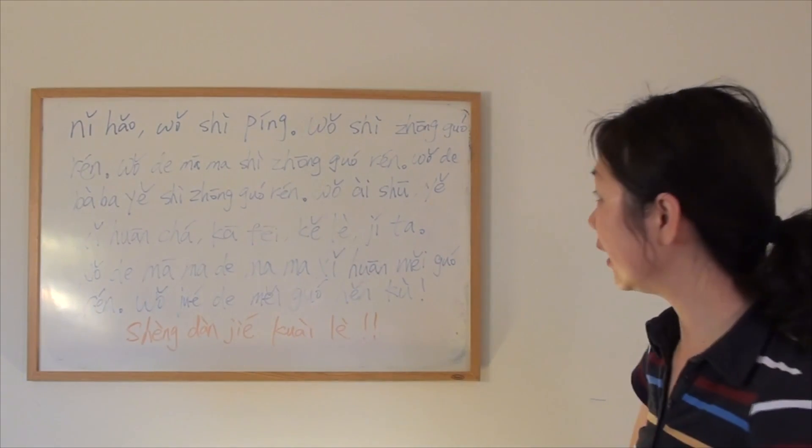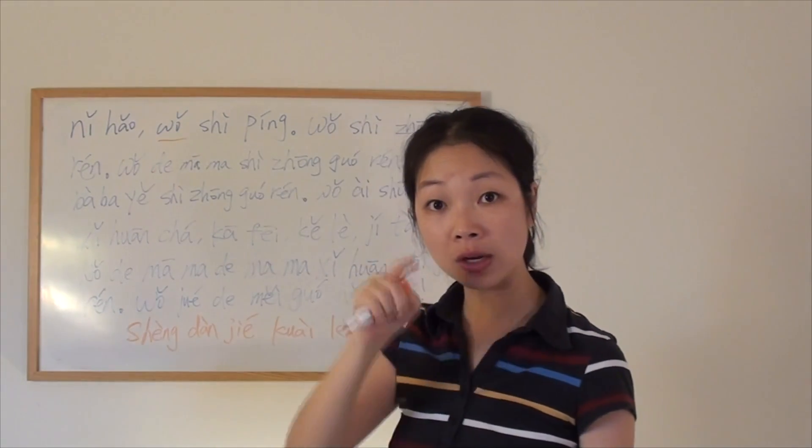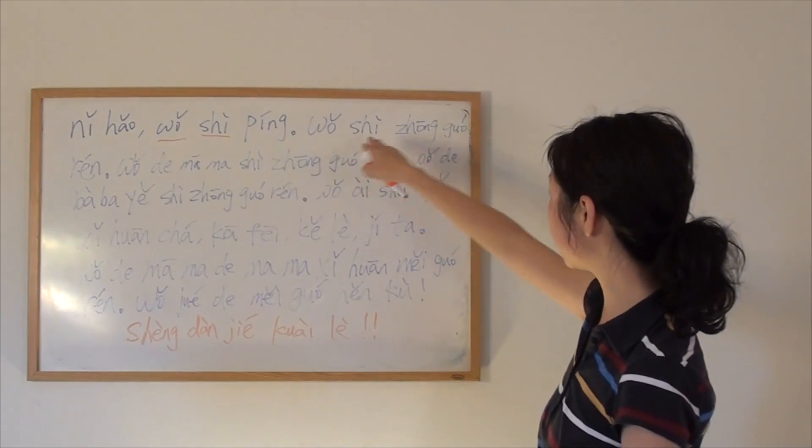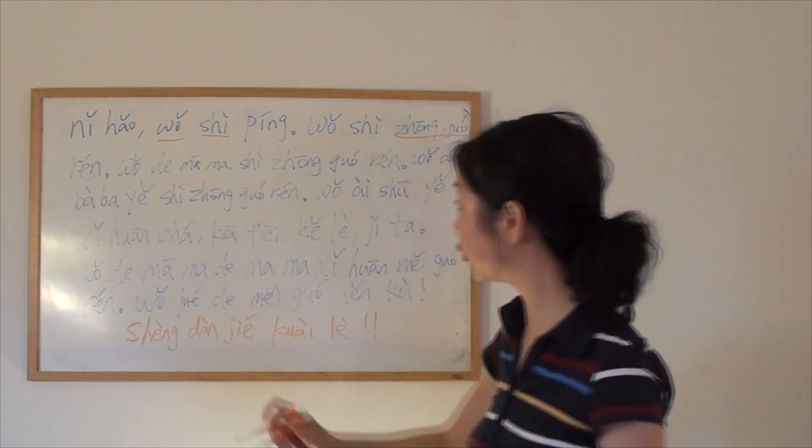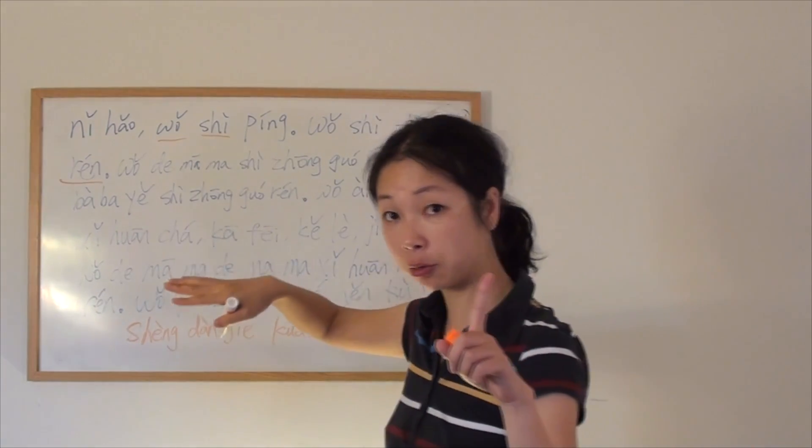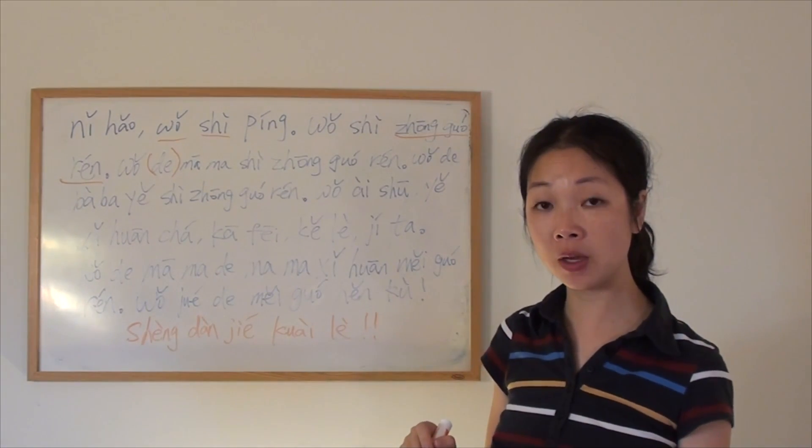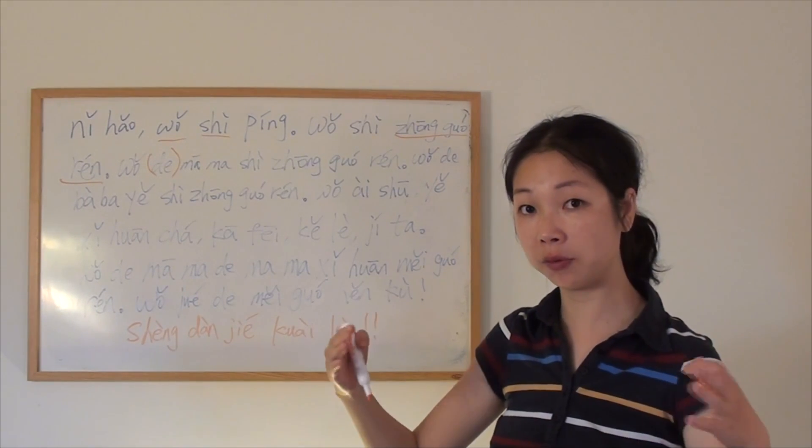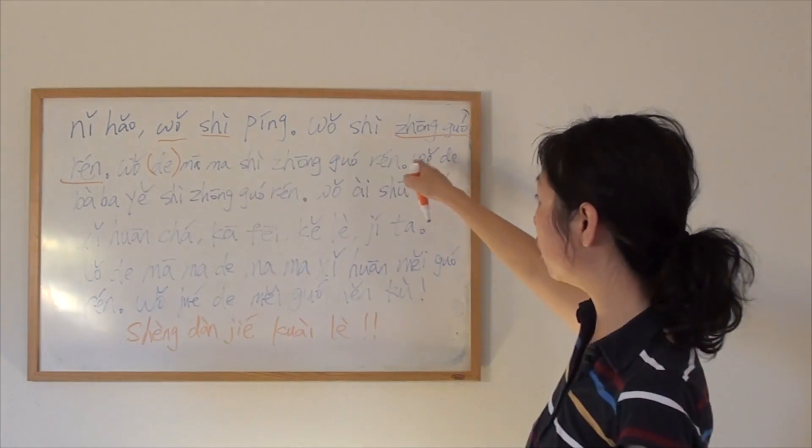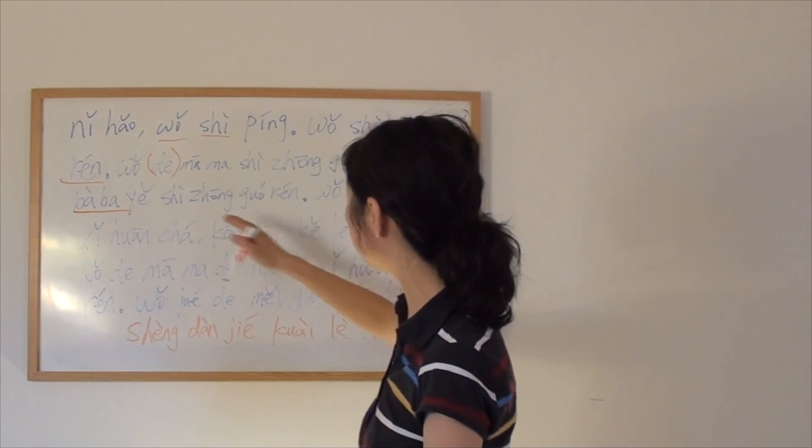Let's review again. 你好，我是, remember, season one we learned 我，你，她，是, the magical word. 我是平, introduce yourself. 我是中国人, 中国 we learned, China, 中国人, Chinese people. 我的妈妈, here, remember the grammar I said? 的 is optional. It totally depends on how you feel, how much close you feel this person to you. So 我的妈妈 equal to 我妈妈, 是中国人. 我的爸爸, 妈妈，爸爸，right?